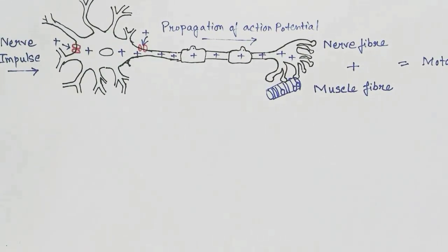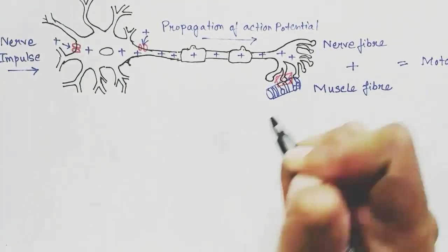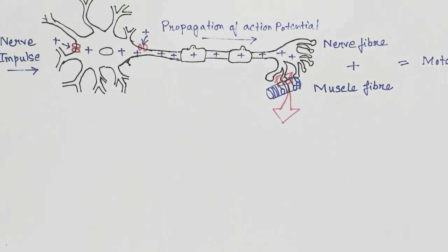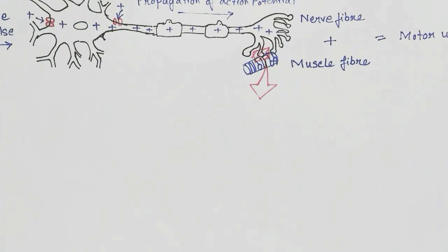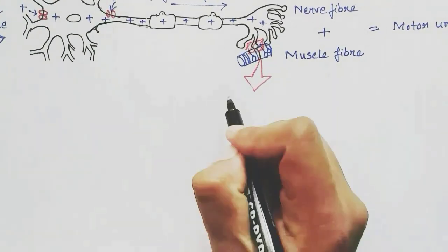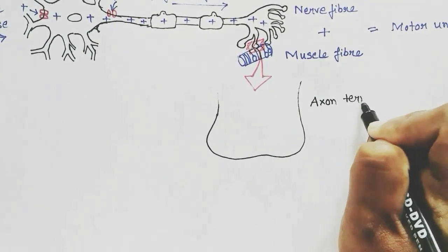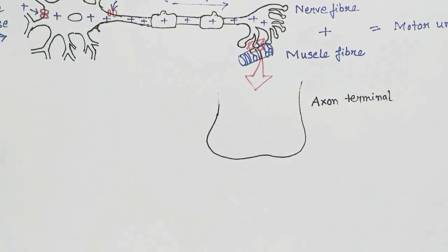Now we will zoom in to the junction of the neuron and the muscle. I'm just doing a recap, not going into detail as I have discussed this in other videos.